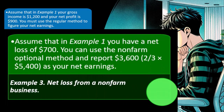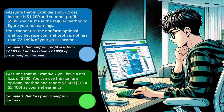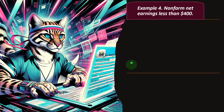Example three: net loss from a non-farm business. Assume that in example one you have a net loss of $700. You can use the non-farm optional method and report $3,600 — two-thirds of the $5,400 — as your net earnings. Why would you do that? A loss is usually good because you can take it against other income. But maybe you don't have any other income to offset, and you'd rather have an increase in income because that results in a higher earned income tax credit and possibly higher Social Security benefits.